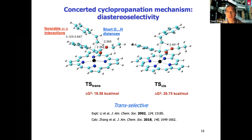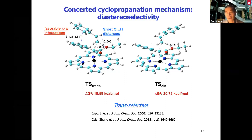We compared both concerted and stepwise pathways — that's the advantage of computational chemistry: you can artificially design the chemical system to undergo one pathway or the other, then compare energies and other properties to see which is more reasonable or energetically favorable. For this constraint, we can also predict the stereoselectivity — this product is more favored because the reaction barrier is much lower.